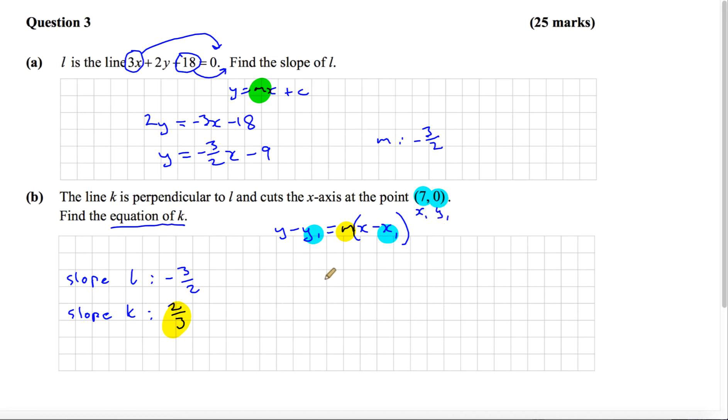Now we're just going to substitute them in. We've got y minus 0 equals 2 thirds by x minus 7. When you multiply this out, y minus 0 is y, 2 thirds by x is 2 thirds x.